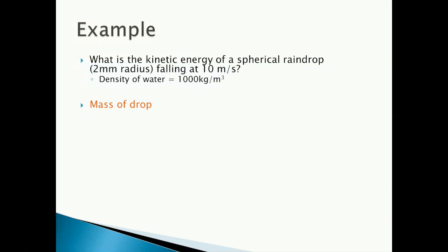First, we need the mass of the drop. We know that density is equal to m over v. Rearranging, we can solve for the mass by multiplying the volume times the density. The volume of the drop is the volume of a sphere with radius 2 millimeters. That's 4 thirds times pi times r cubed. We get a volume of the drop of 3.35 times 10 to the minus eighth meters cubed.